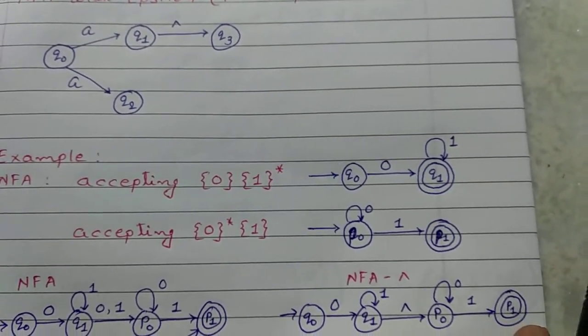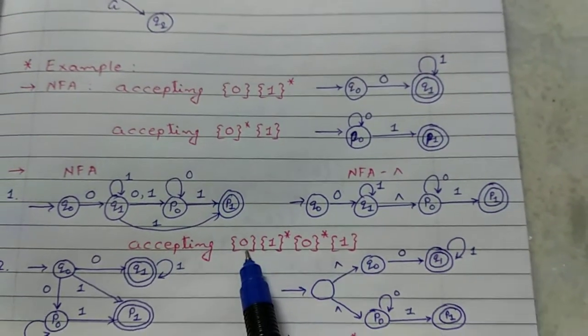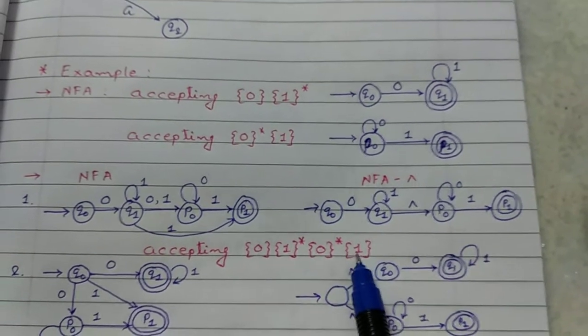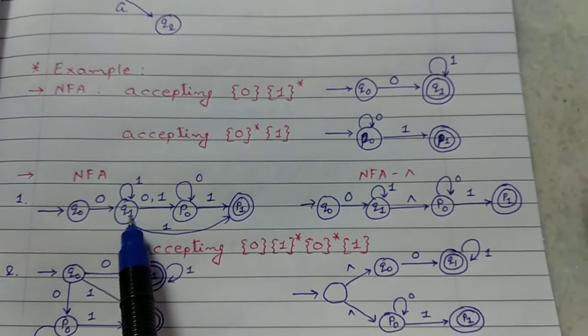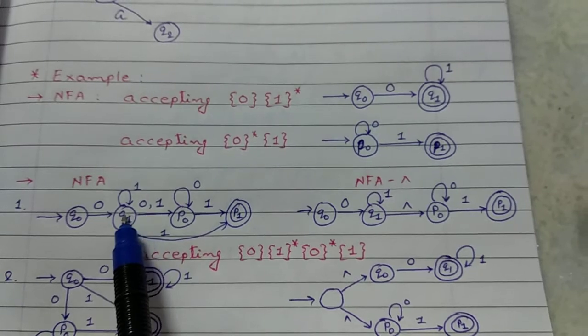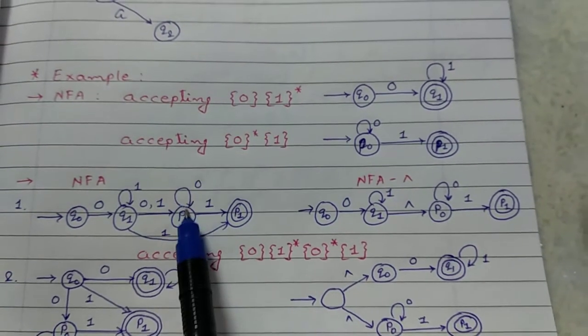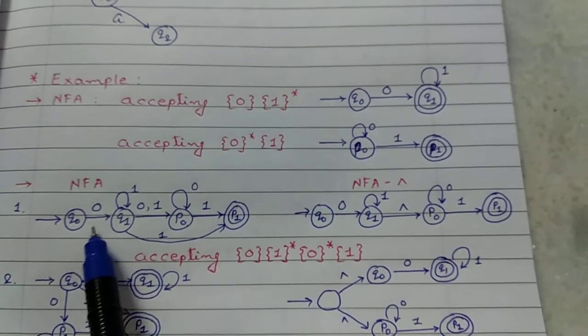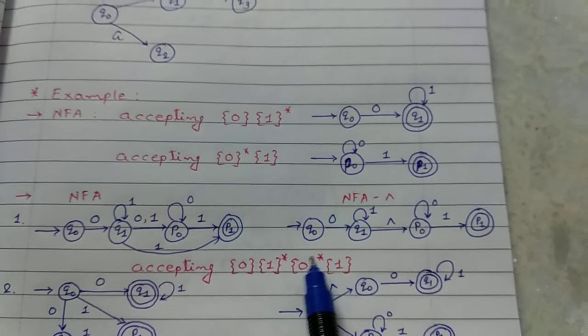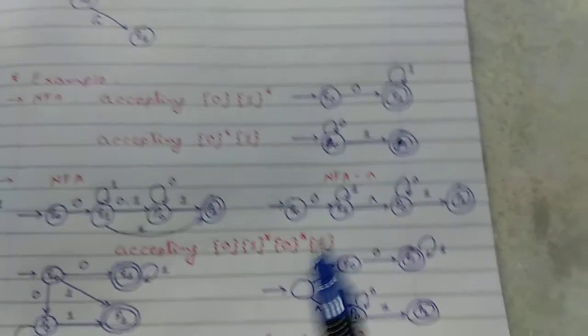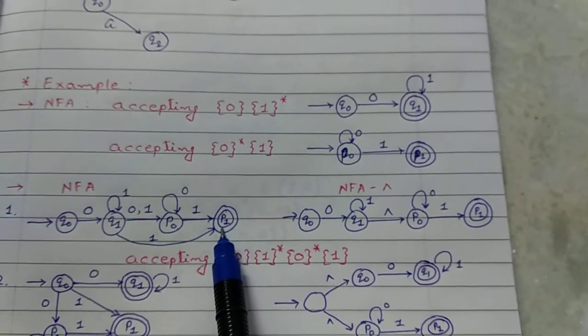Now, draw NFA and NFA Epsilon for the input string accepting 0,1 star, 0 star, 1. First draw NFA: Q0 to 0, Q1. Then, after 1 input, next state is P0. After 0 input, next state is 1. For 0,1 star, 0 star, 1, if 1 star and 0 star has 0 occurrence, then 0,1 is also an acceptable string. So, 0 to 1 from P1.